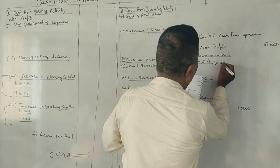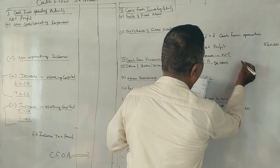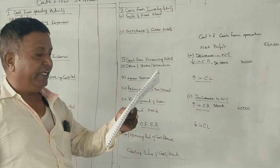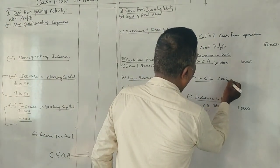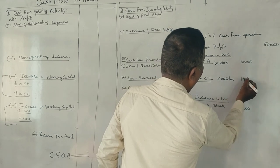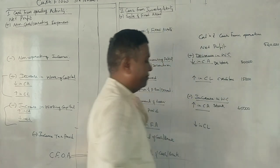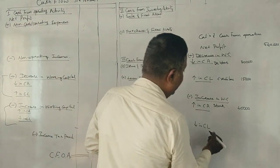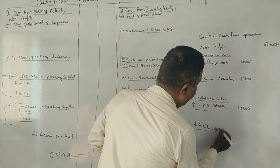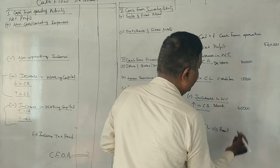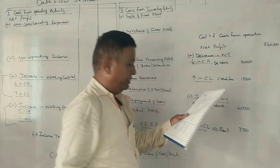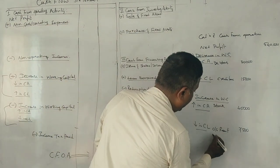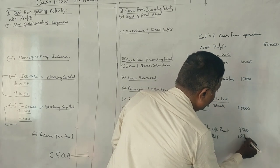Creditors, a liability, increased by 15,000, so we add this. Outstanding rent is a current liability that decreased by 7,500, so we subtract this. Bills payable decreased by 15,000, so we subtract this as well.